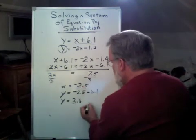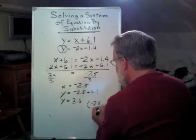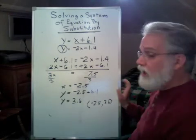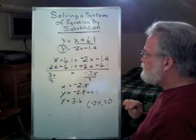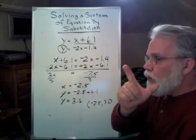So my solution to this problem is minus 2.5, 3.6. To find out if that's the correct answer, we have to do one more thing. Let's put both those numbers into this equation and see if we get the right answer.